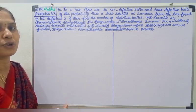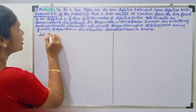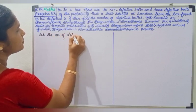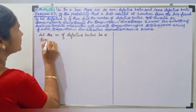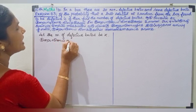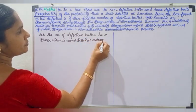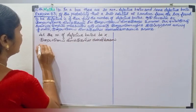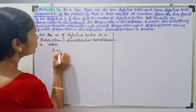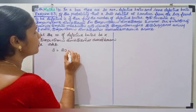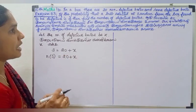We will take x. Let the number of defective balls be x. So, n of S is 20 plus x.